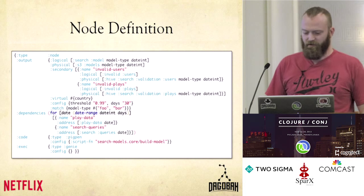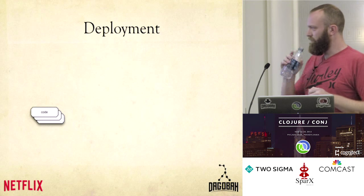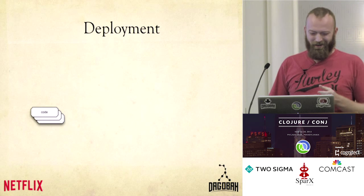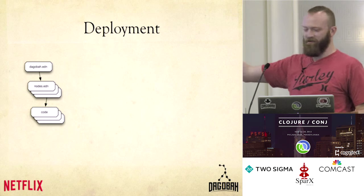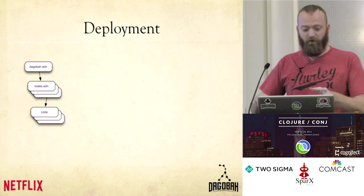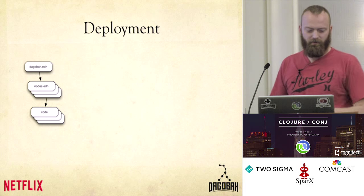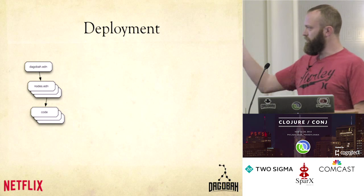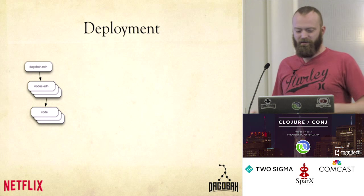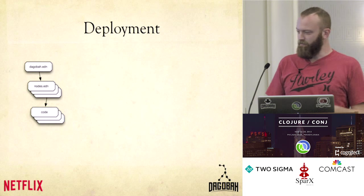So I have my node definition now — what do I do with it? Say I have some code. These are files here. Next to my code, I put the node definitions — it's just an EDN file that sits there. You can have many different nodes EDN files if you want to break up your node definitions to go along with the different pieces of code. But at the root of your project you should have a dagobah.edn file — that's just going to tell it where all the nodes are and what artifacts need to be built: do I need to build a jar, do I need to build a Docker image?